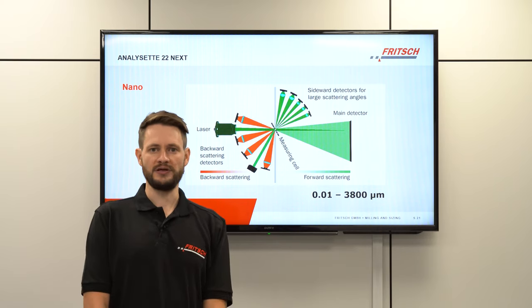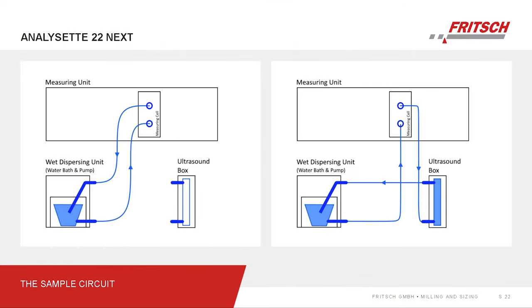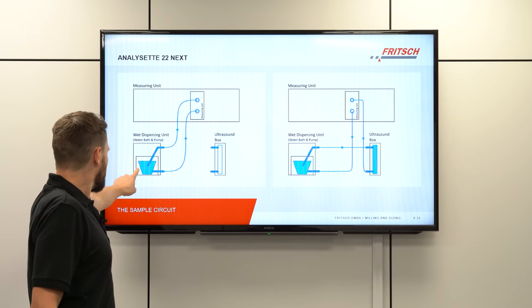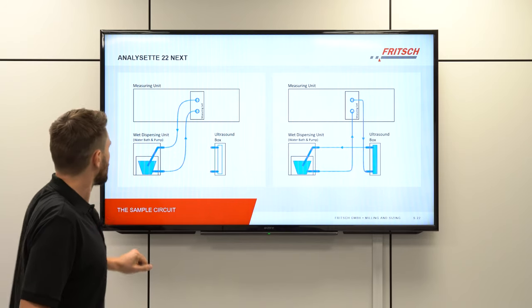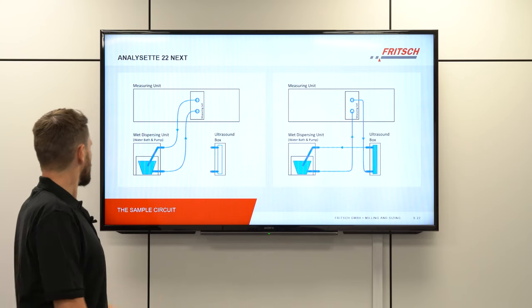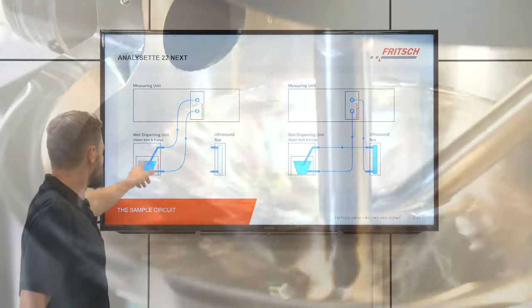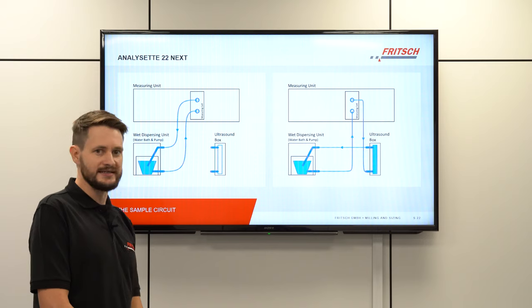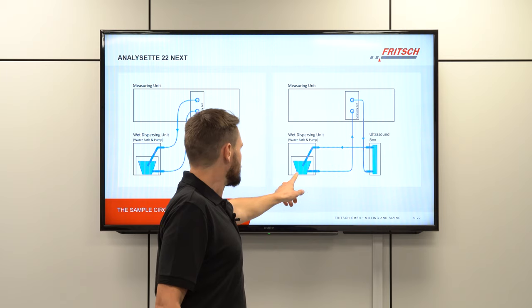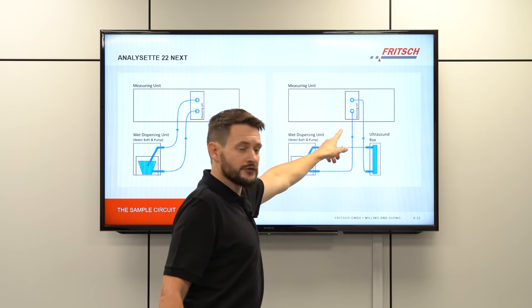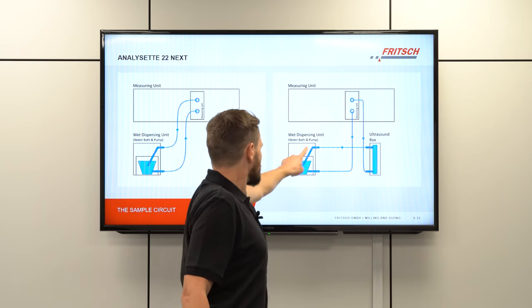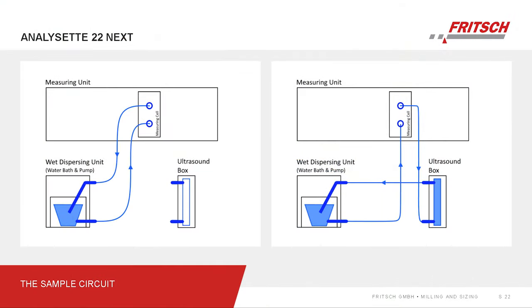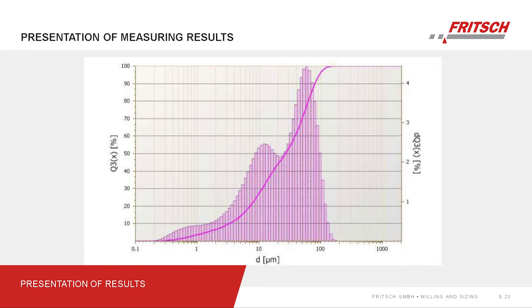For sample circulation within the system there are two possibilities. In the first method, the wet dispersion unit has a chamber with a water bath, and the water is pumped through the measuring cell and back into the water bath through a pipe — the so-called reflux, whose position can be changed depending on the application. If ultrasound is needed for a sample, you can connect the hoses so the water flow also passes through the ultrasonic box before returning to the water bath.